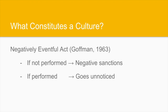Another concept is Goffman's 1963 proposal of a negatively eventful act — characterized by two features: if it is not performed, it implies negative sanctions; however, if it is performed, it passes unnoticed. This would be the case of knocking on a door before going into someone else's office. If we are strangers and do not knock, we would be considered impolite and receive a social sanction. If we knock on the door, we may act normally because we are following cultural patterns within a specific society.